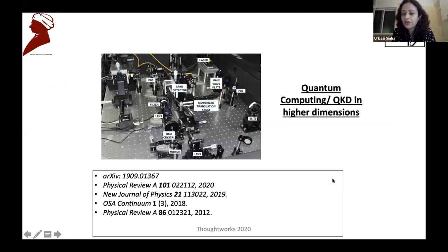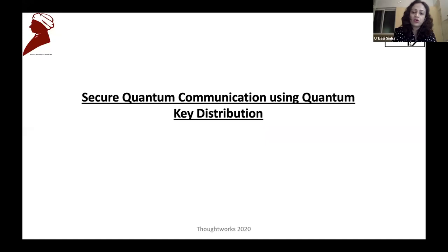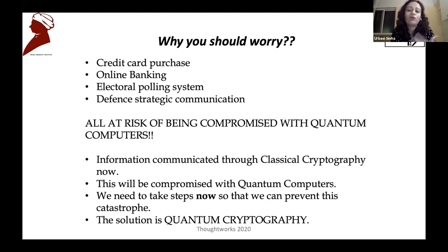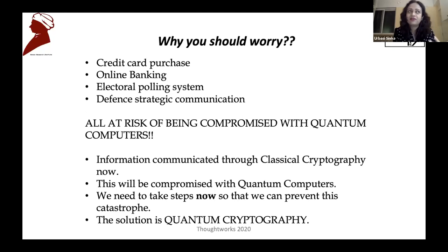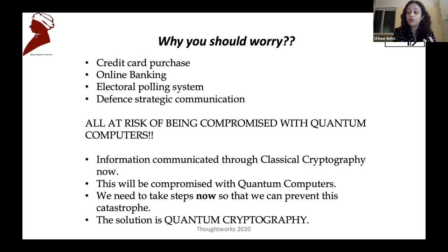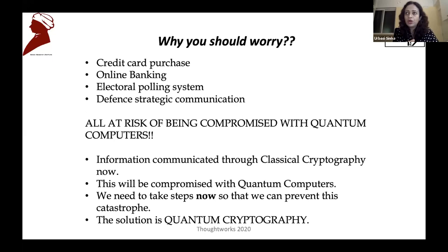Now going on to secure quantum communication using quantum key distribution. Why should you be worried about this? Whether it's purchasing something using a credit card, online banking, voting, or defense communication — these are all examples of communication we are directly or indirectly involved in. What is common between them is that these are all means of strategic communication. If I'm giving my credit card details, I only want the intended organization to know that, not a third party.